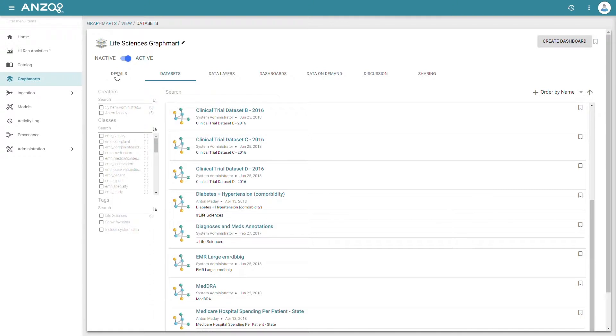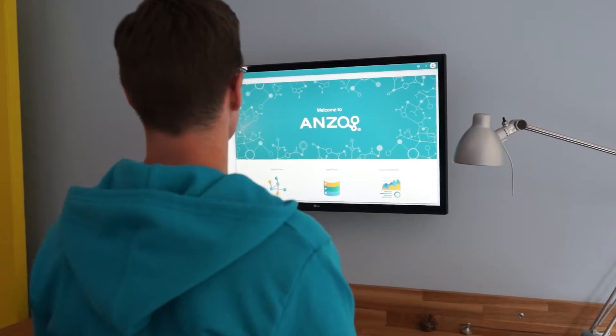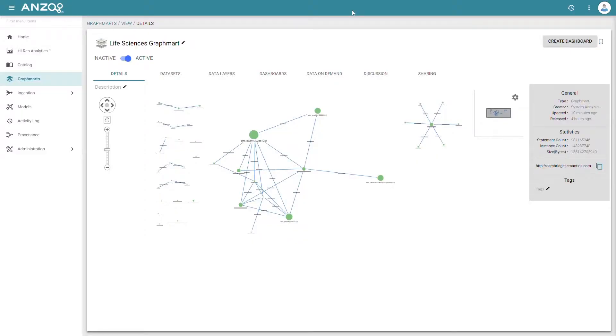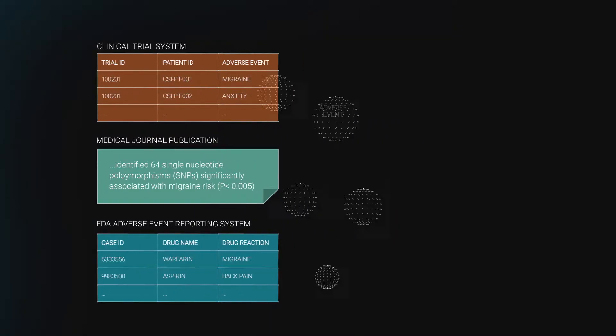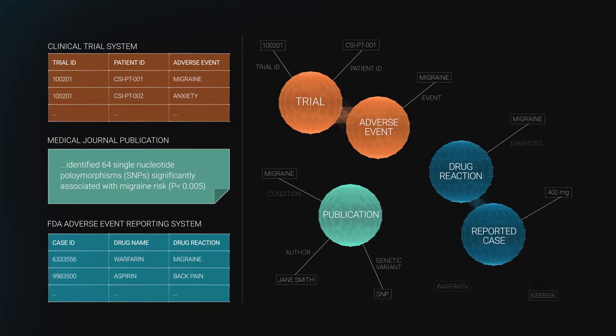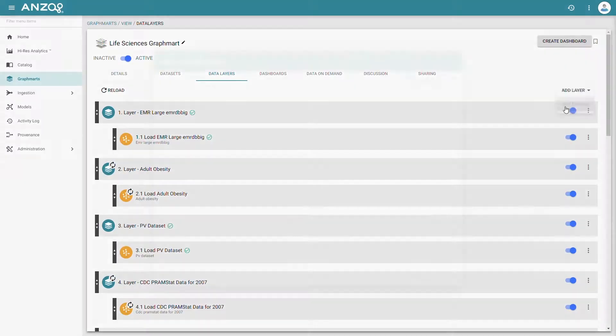Anzo Graph also shapes and prepares data to support new use cases and analyses on demand. Anzo does this with data layers, which organize and manage the process of building and transforming your data in memory. Data layers can do things like link-related concepts, assign granular access controls, and transform graph structures. These layers can even be shared and reused across the organization.